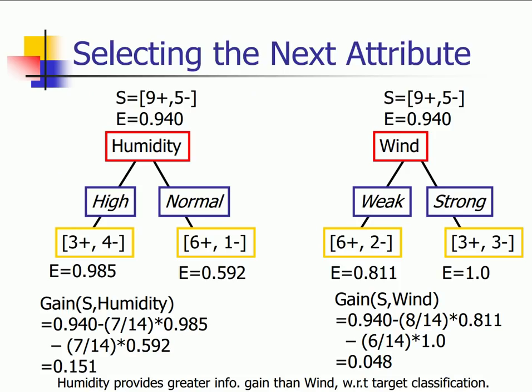Now selecting the first splitting attribute, I start with humidity. It has 9 positives and 5 negatives. Entropy at that point is 0.94. It splits as high and normal, which has 3 positives and 4 negative samples, and 6 positive and 1 negative sample. The entropy at the individual points, calculating from that formula—minus p log of p plus minus p negative log of p negative—you get 0.985, and for the normal samples you get entropy is 0.592.